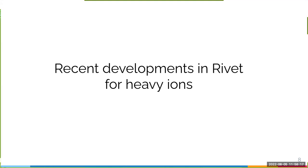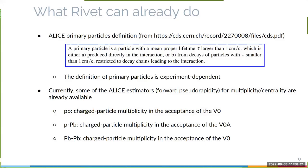I will now show some recent developments in Rivet, especially for heavy ions. For example, Rivet contains the ALICE definition of primary particles — at the link shown you can read about the definition. There is a specific projection, 'ALICEPrimaryParticles', that will give you the particles that ALICE considers primary. Ideally we would have this for each experiment, which is not a reality yet, but it is something that will be available in Rivet at some point.